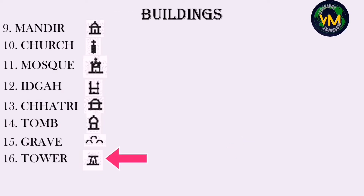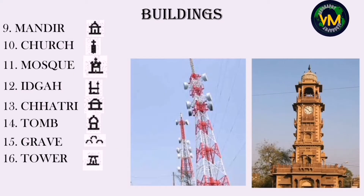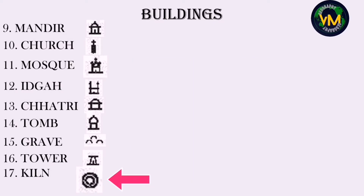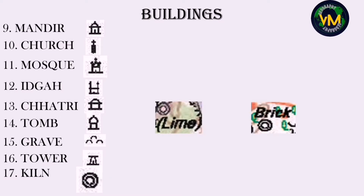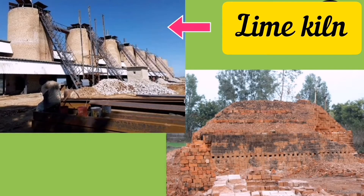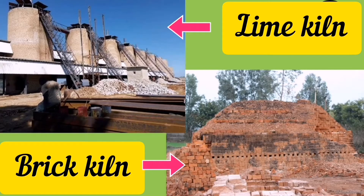Number sixteen is the symbol for a tower — mobile towers or clock towers, it may be anything. Number seventeen is a kiln. Near it, usually the word 'lime' or 'brick' will be seen. A lime kiln is where limestone is converted into lime, and a brick kiln is where blocks of clay are converted into bricks.